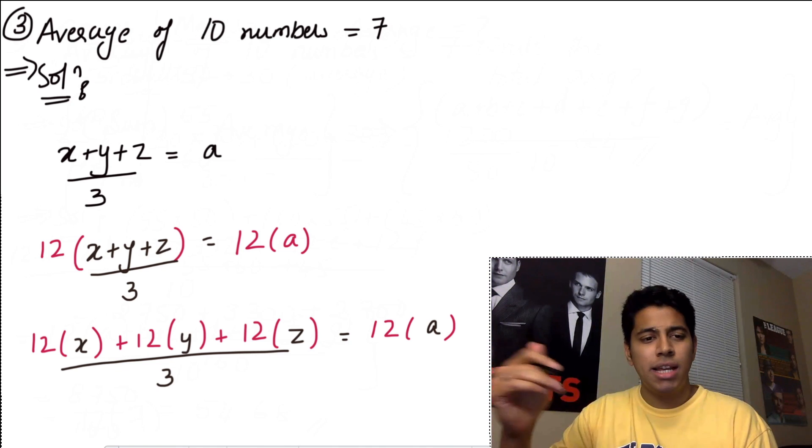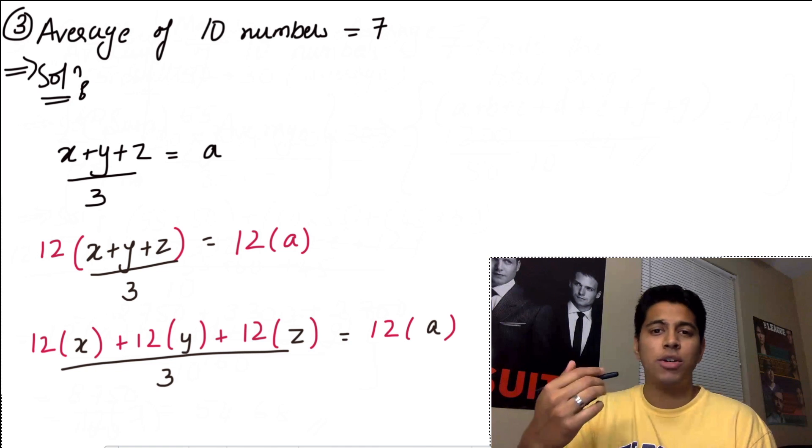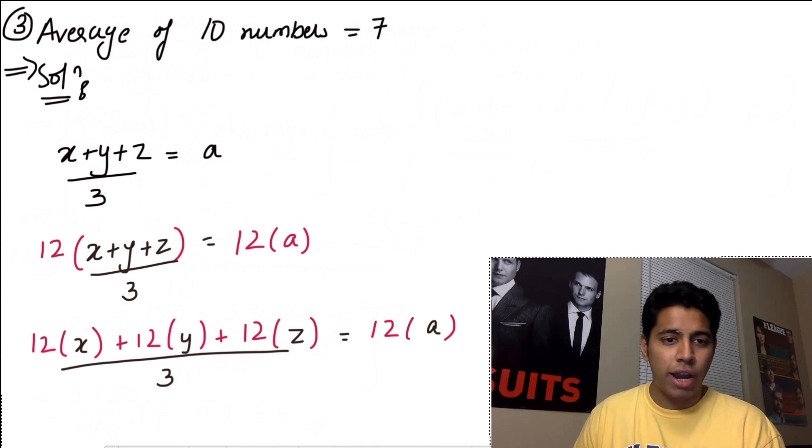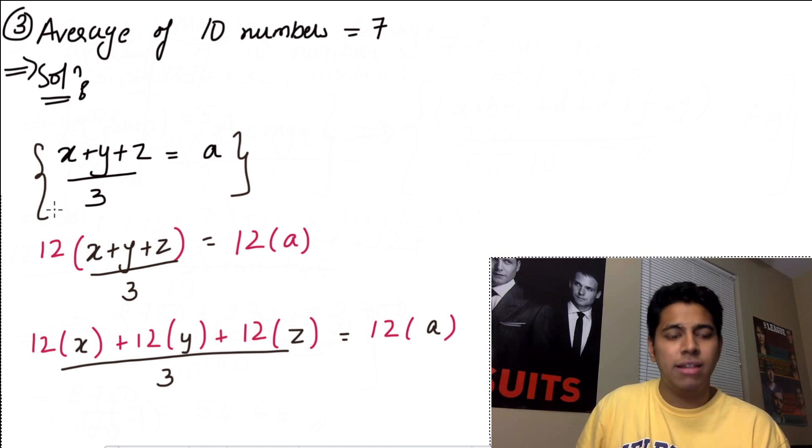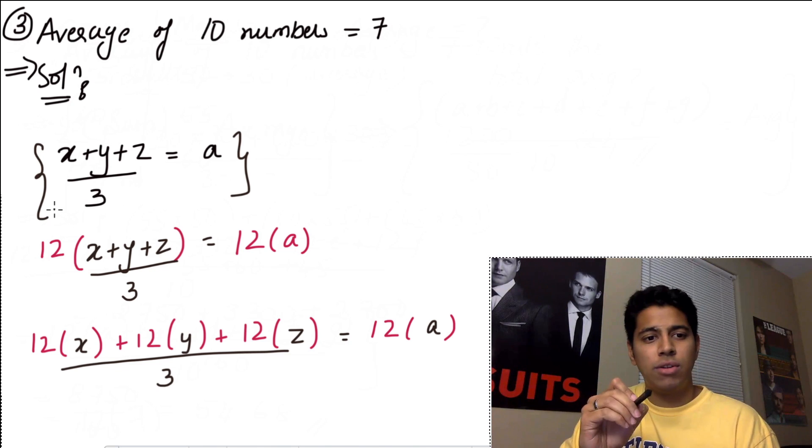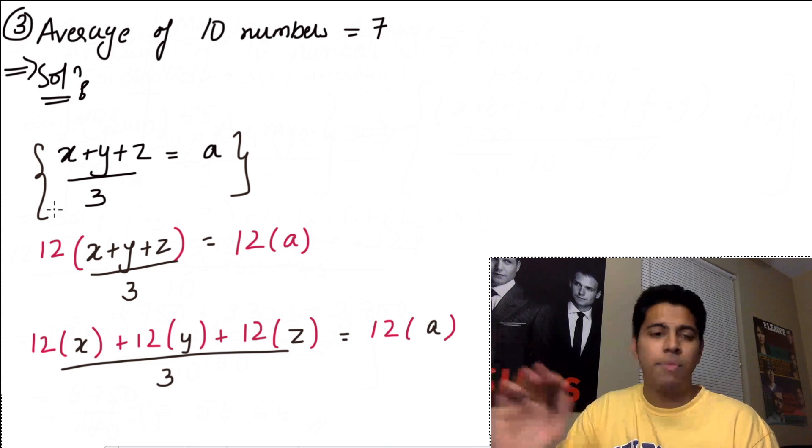Now forget about these 10 numbers. Suppose you have three numbers. You have x, y and z. And I ask you to find the average. So you're going to write an equation like this: x plus y plus z by 3 is equal to your average. So now suppose x, y and z are some numbers and you get the average a.